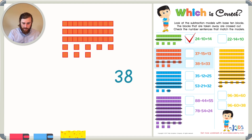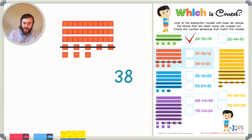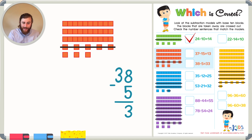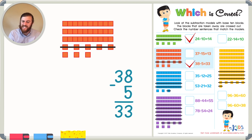How many cubes have been crossed out? We can see that 5 cubes are crossed out, so we want to take away 5 from 38. We put 5 in the ones place and count backwards from 8 five places: 8, 7, 6, 5, 4, 3. So 8 minus 5 is 3, and 3 minus nothing is 3. Our number sentence reads 38 minus 5 equals 33 — that's the second answer choice.